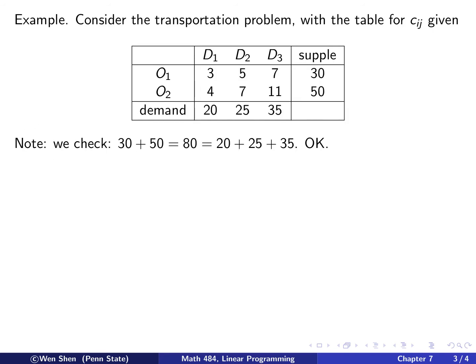Let's take an example. Consider the following transportation problem with the table below given. Inside the table are the costs CIJ. I have two origins and three destinations. These are the costs to ship from one origin to a specific destination. This one will be the cost of shipping from O2 to D3. Here is the supply: Origin 1 has 30, Origin 2 has 50. Down here is the demand: D1 demands 20, D2 25, and D3 35.